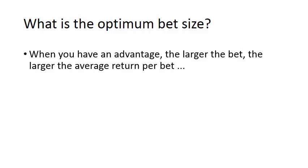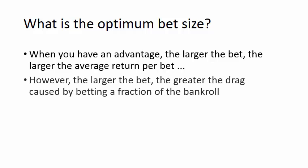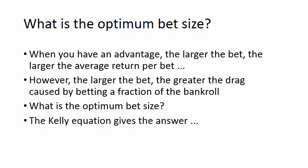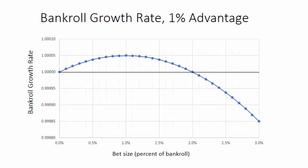So what is the optimum bet size? When you have an advantage, the larger you bet, the larger your average return per bet. But the larger the bet, the greater the drag caused by betting a fraction of the bankroll. The Kelly equation gives the answer. I've plotted the equation here for a 1% advantage — this graph shows the bankroll growth rate and how it varies with your bet size. The maximum bankroll growth rate occurs when you bet 1%, the same as your advantage.